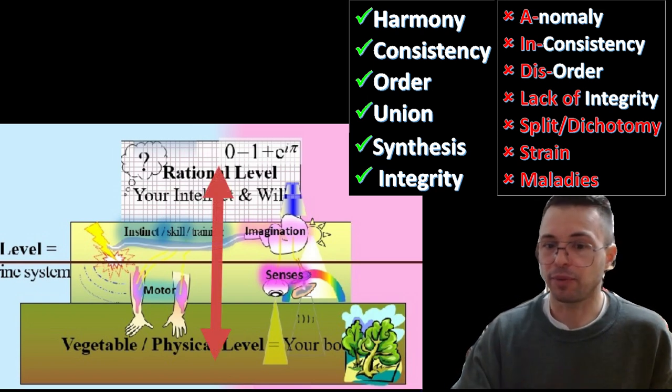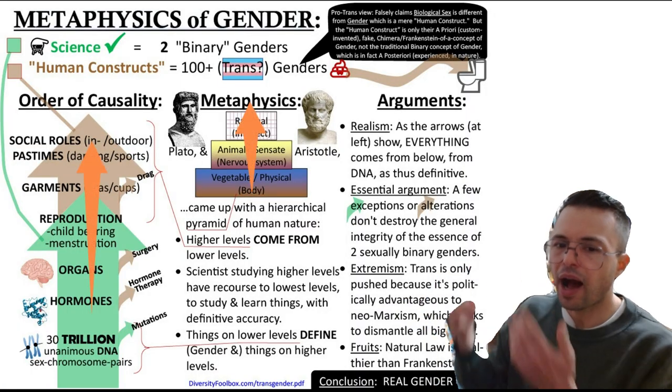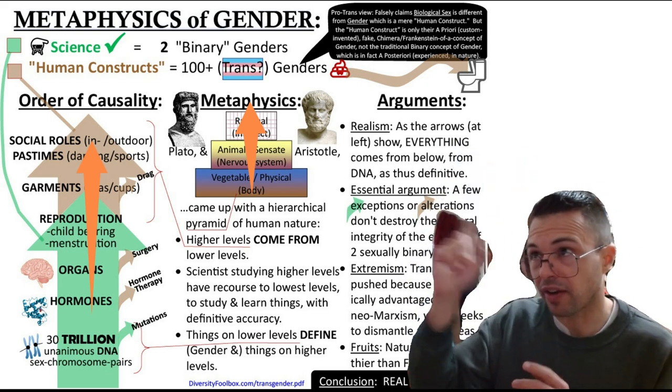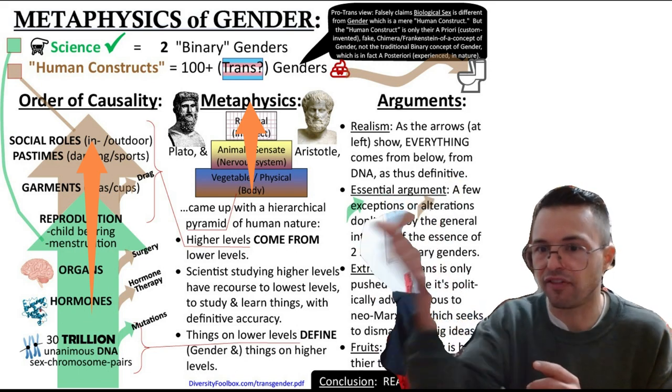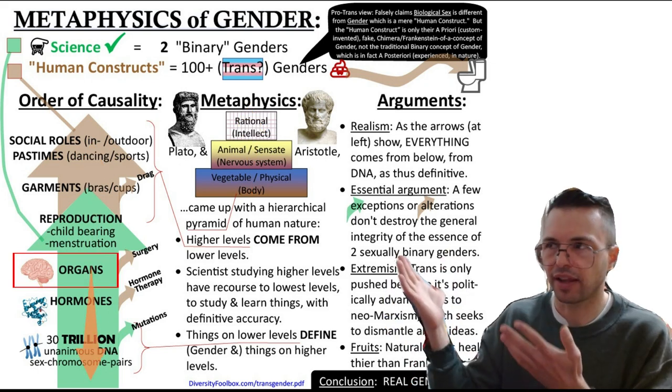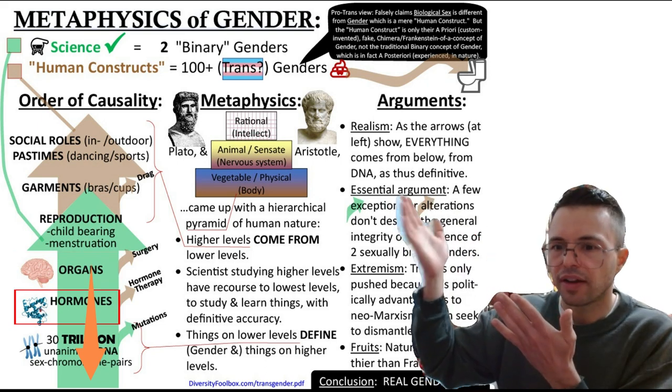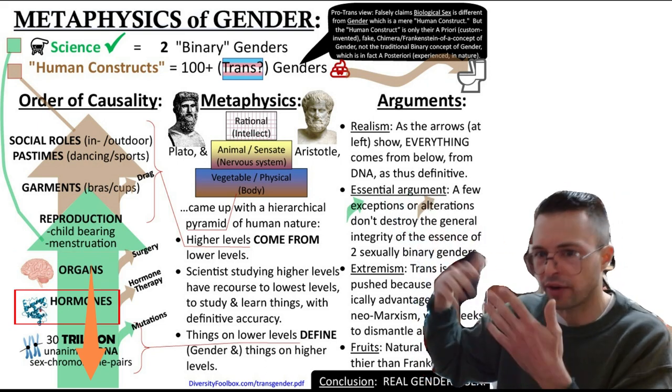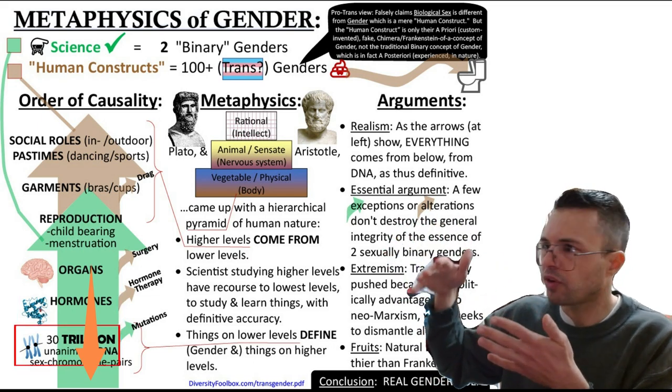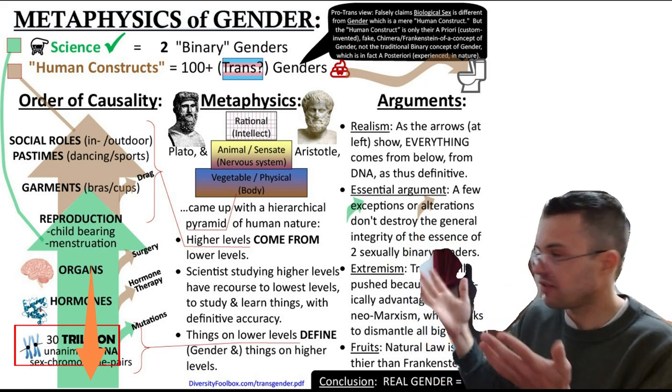So, after you've gotten them to acknowledge the need for vertical integrity, then you can move on to demonstrating how lower levels of human nature define higher levels, including those higher levels' aspect of gender. For example, if you have two boys and one has breasts and the other doesn't, then you can look at a lower level, at their hormones, to see if one has a particular hormone that is over or under expressing. Or even better, you can look all the way down at DNA to see what hormones ought to be being expressed, and even what gender each individual ought to be.